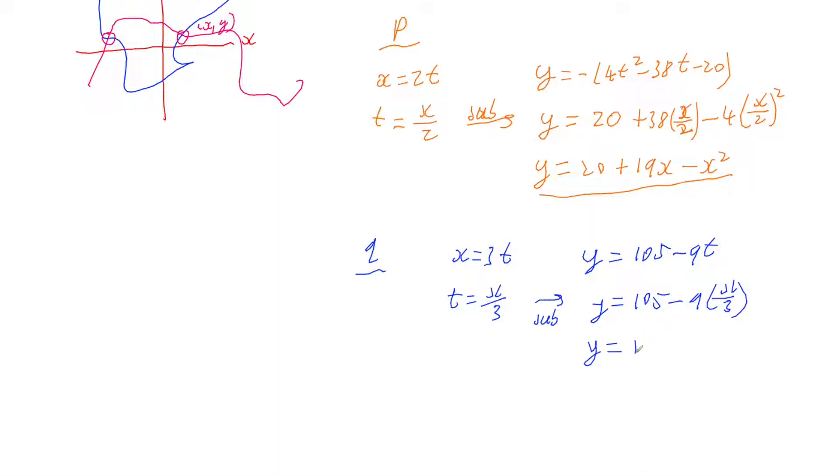So again the simplest one to rearrange here is going to be our x equation, so we're going to have that t is going to be a third of x. And then substituting that into our y equation we're going to have y is 105 minus 9 times a third of x, which simplifying that is going to give us 105 minus 3x.